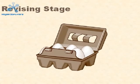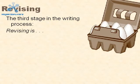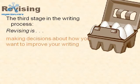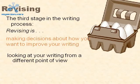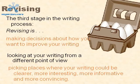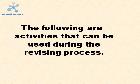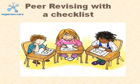The revision stage. Revising is the third stage in the writing process. Revising is making decisions about how you want to improve your writing — looking at your writing from a different point of view, picking places where your writing could be clearer, more interesting, and more informative. Activities include self-revising with a checklist and conferencing with teachers and other students.